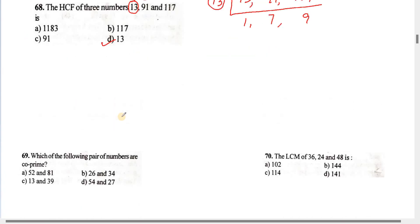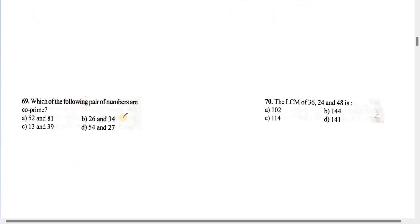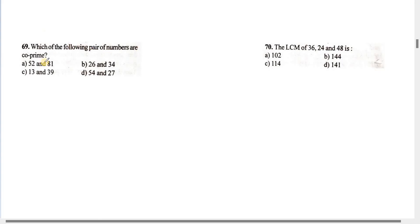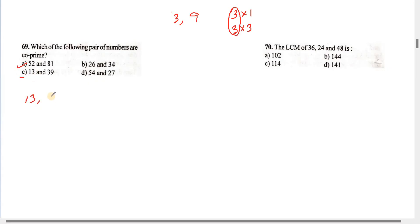Number 69: Which of the following pairs of numbers are not co-prime? Looking at the options — a common factor of 3 into 9, and 3 into 3 — they share a common factor other than 1. So those numbers are not co-prime. The answer is the pair that is not co-prime.